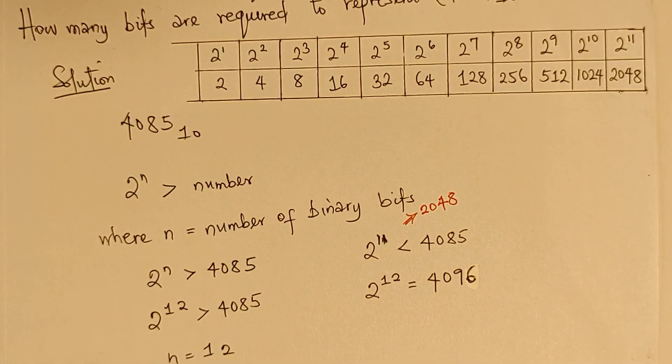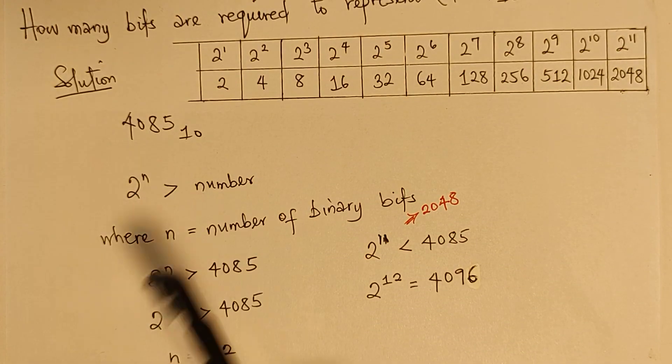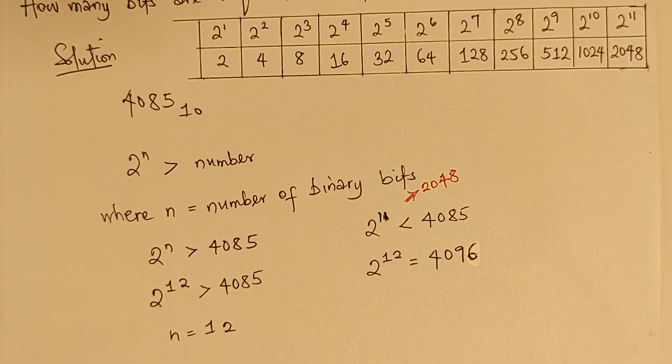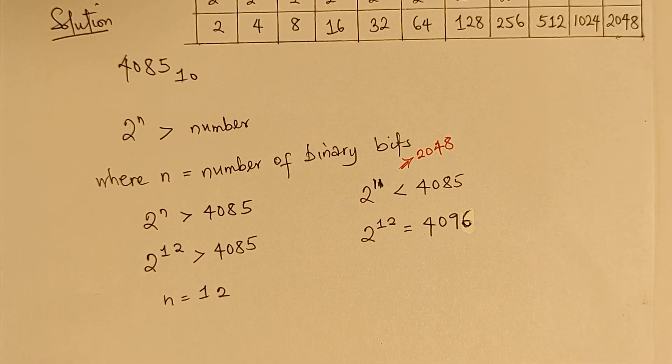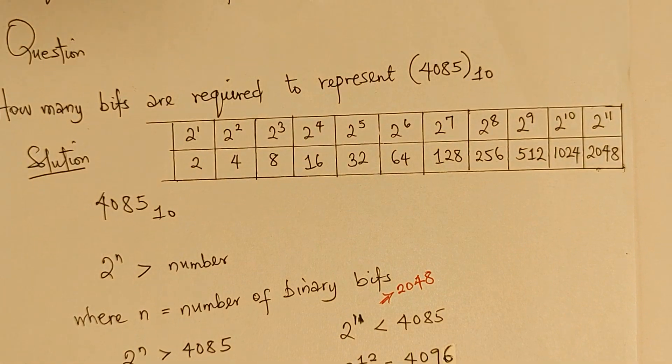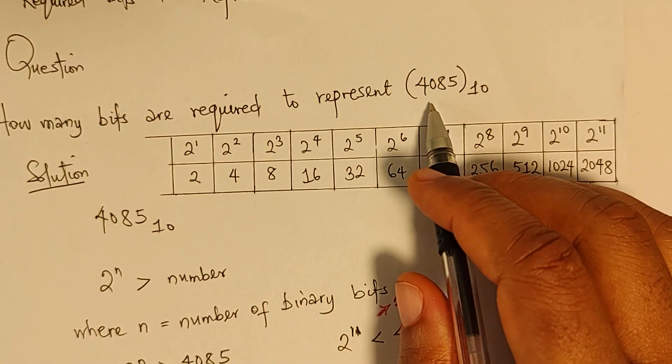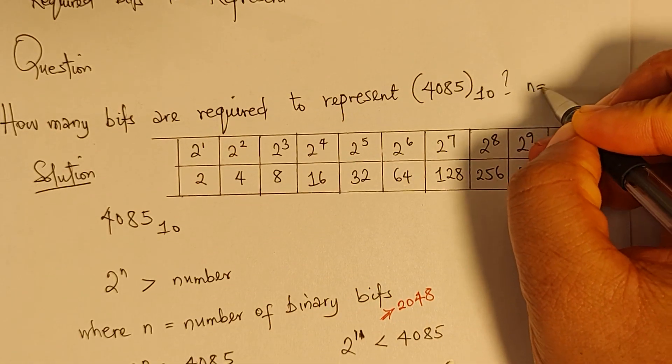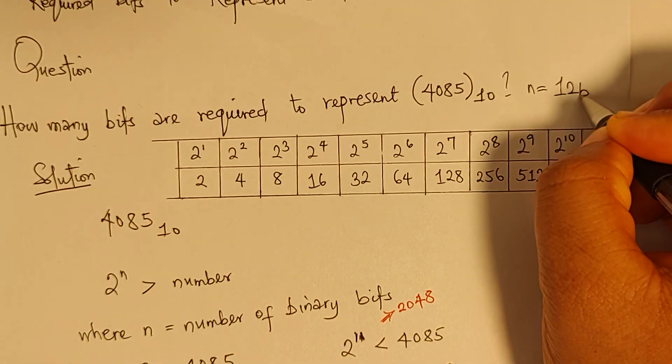So, to that point, we are going to represent our N, which is the number of bits, as 12. So, at the end of the day, our N will be 12. So, for this given question, where we are asked, how many bits are required to represent 4085 in base 10? We will just come here to write, the bits will be 12 bits.